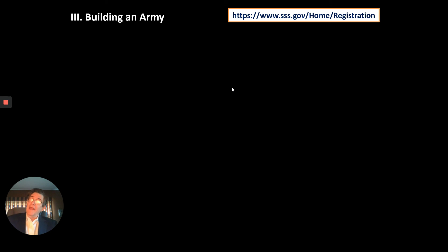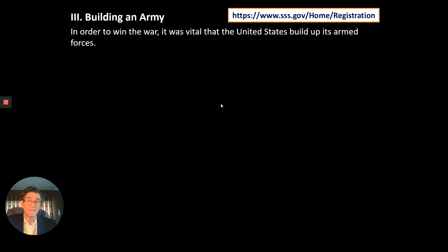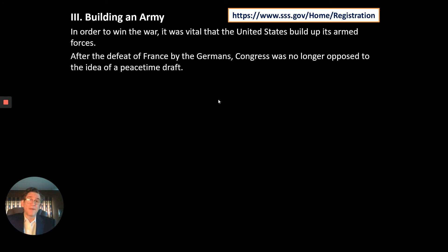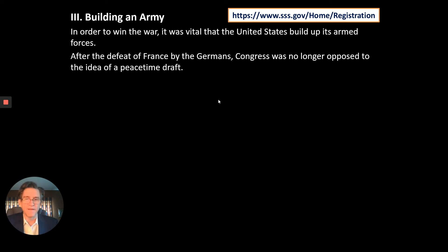We're also going to have to build an army—which means getting men to fight. After the defeat of France by the Germans in 1940, before we were even in the war, Congress realized that should America get into the war we didn't have enough men to fight. So they were no longer against the idea of a peacetime draft. A draft simply means the government has the authority—sometimes through a lottery—to make 18-year-old men and older go off and fight, and of course many of them would die defending the United States of America.